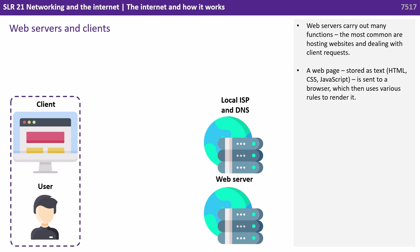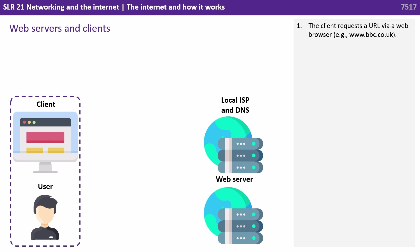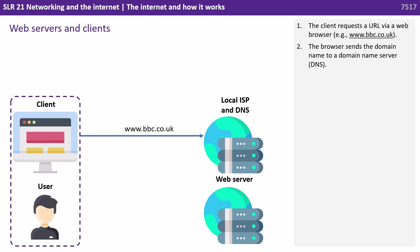Web servers carry out many functions. The most common are hosting websites and dealing with client requests. A web page, stored as text, is sent to a browser, which then uses various rules to render it. So first, the client requests a URL via a web browser, e.g. bbc.co.uk. The browser sends the domain name to a domain name server.